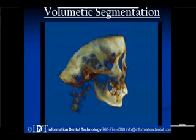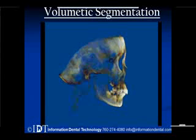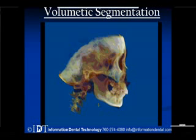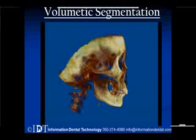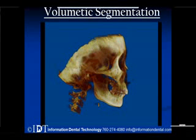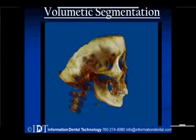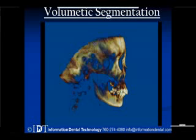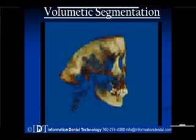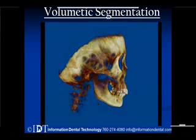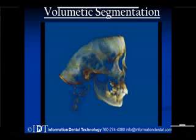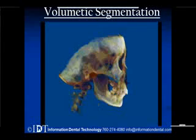The Hounsfield units represent the level of density — the higher the number, the higher the density; the lower the number, the lower the density. If we pick a number that's high on that threshold, it's going to discard any densities lower than that. So as you move that threshold up, you start to lose bone — the condyle, the coronal process. And if we go too low, we start to bring in soft tissue, which gives the appearance of bone.